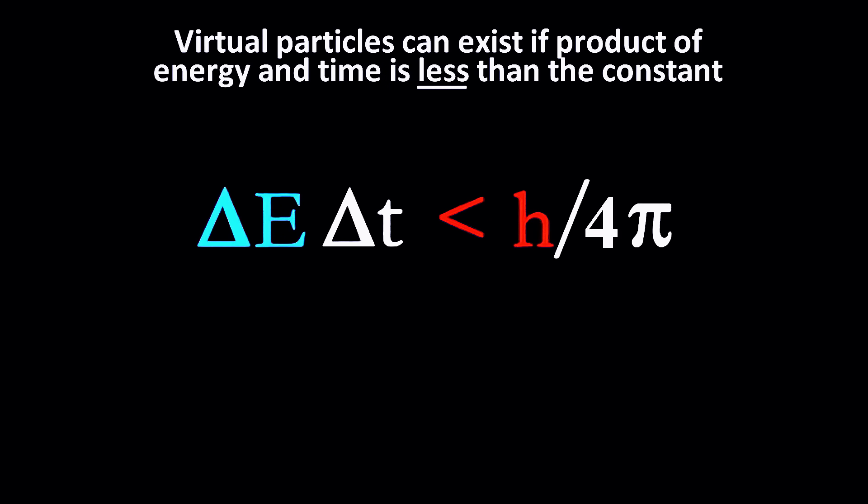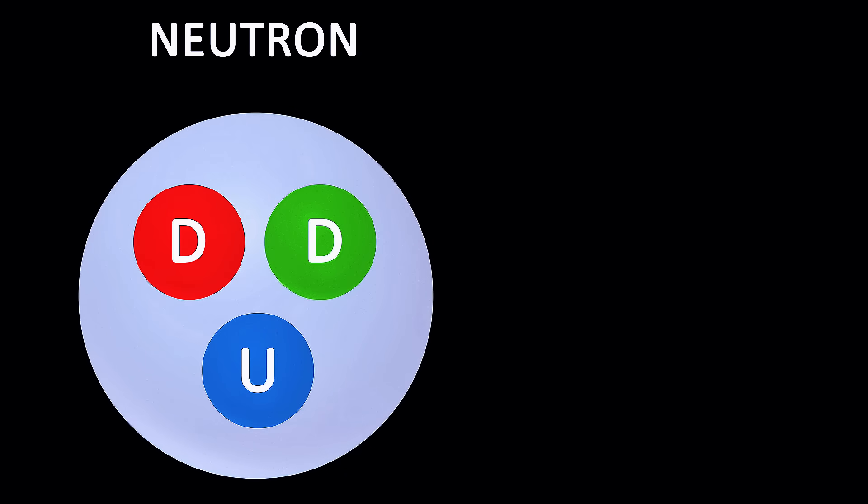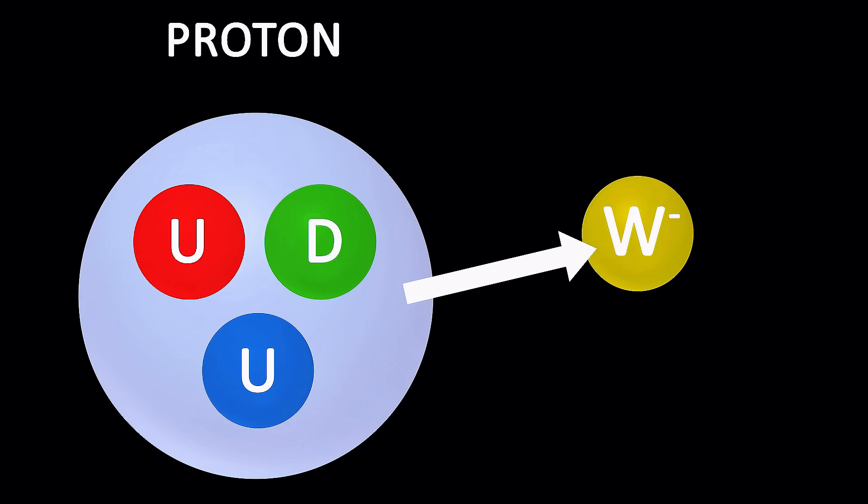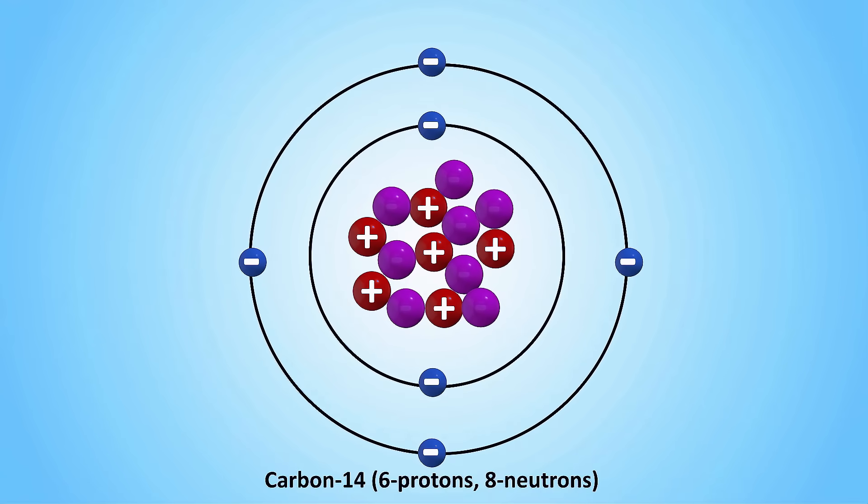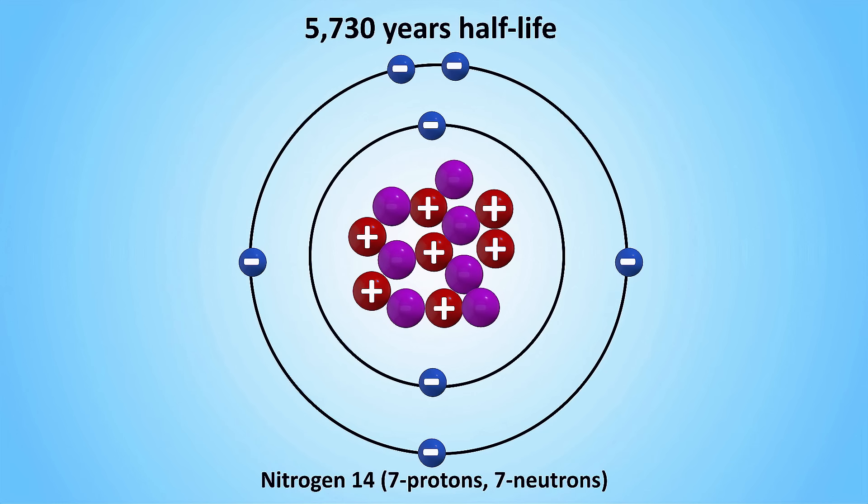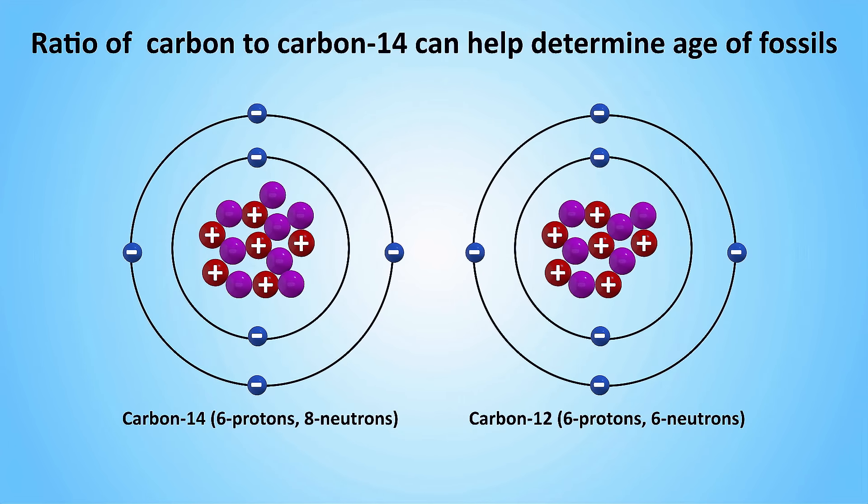Yet, it's the only force that's able to change the flavor of quarks, meaning it can change, for example, a down quark into an up quark, transforming neutrons into protons, and vice versa. Beta decay has useful applications, take carbon-14 for example. It has 6 protons and 8 neutrons, making it unstable. Over time, one of its neutrons transforms into a proton, turning it into nitrogen-14. This process has a half-life of 5,730 years. So by looking at the ratio of carbon-14 to regular carbon-12 in fossils, archaeologists can determine its age.